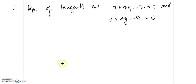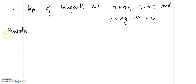Let us look at the equation of the normals which are in the parametric form. Let us first consider the case of a parabola, specifically a parabola having the equation y squared equal to 4x.